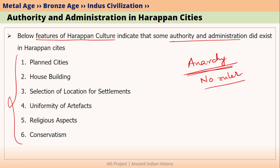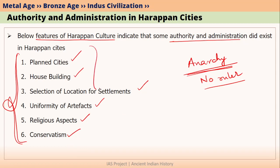That is why we can say there was some kind of authority and administration in Harappan cities, which basically maintained all these important features: planned cities, house building, selection of location for settlements, uniformity and standardization of artifacts, religious aspects, and finally the conservatism of Harappan people. Let us discuss these aspects one by one and relate them to authority and administration in Harappan cities.